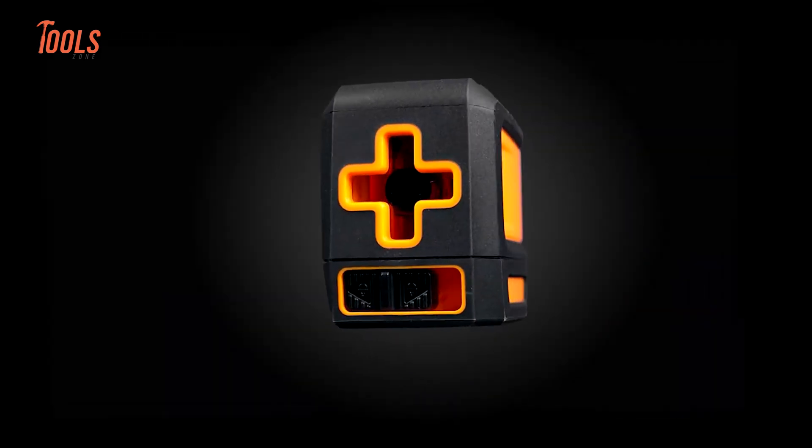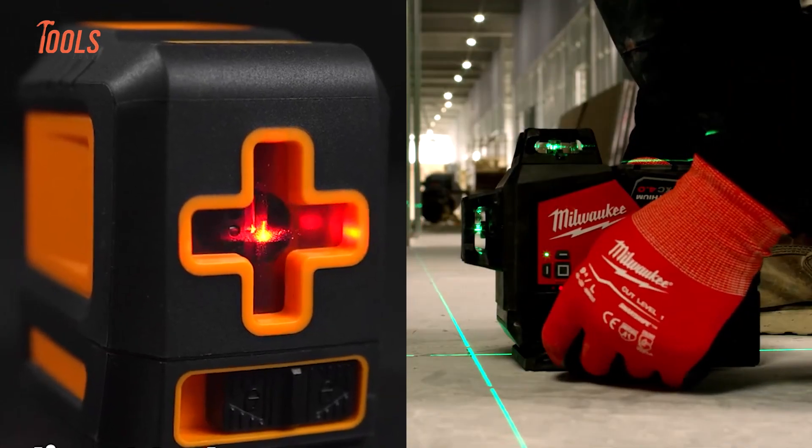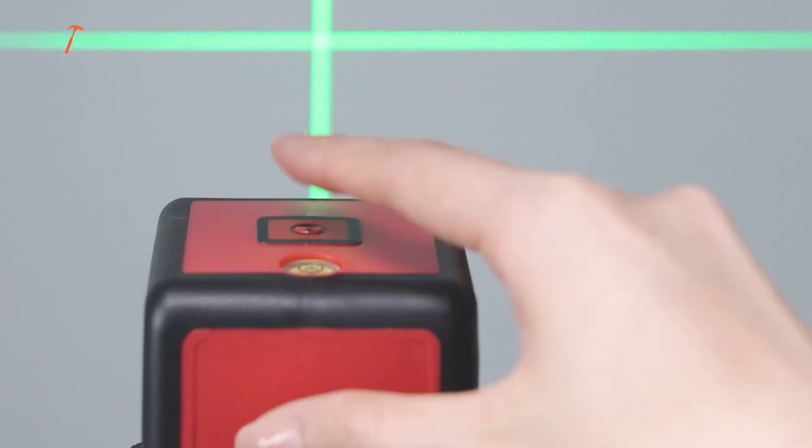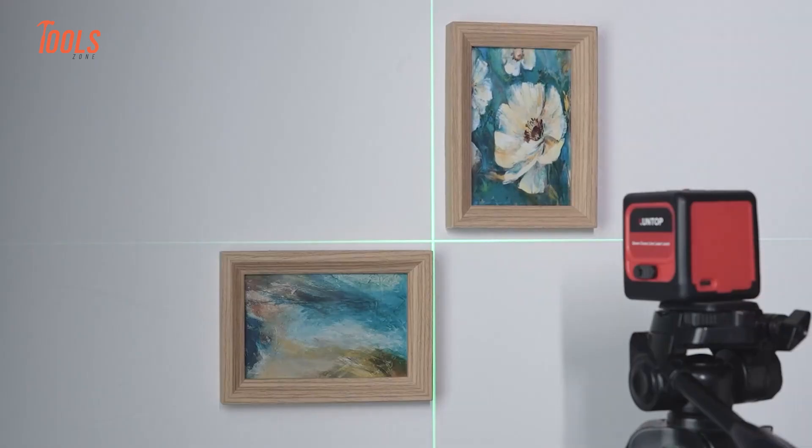Now let's talk about build quality, something that becomes very obvious once you hold both versions in your hands. Cheaper laser levels are often made with light plastic and feel a bit delicate. They're fine for small indoor jobs, where there's not much risk of dropping them.